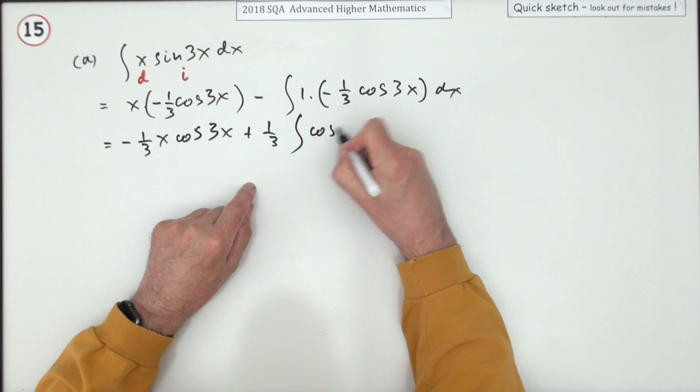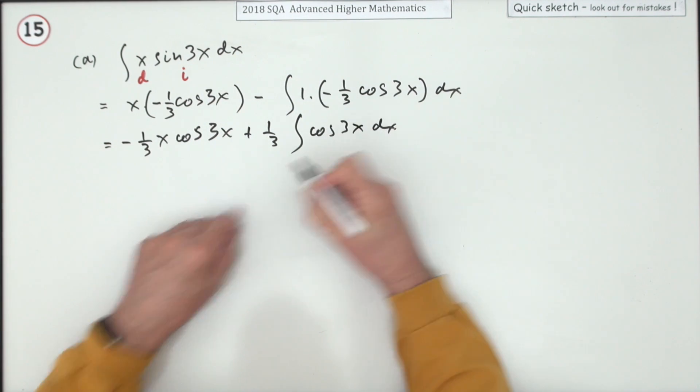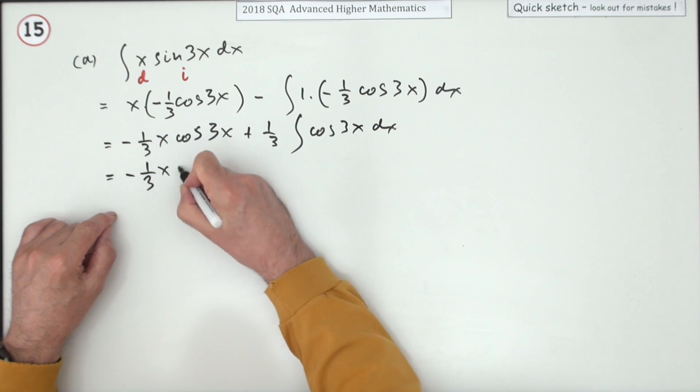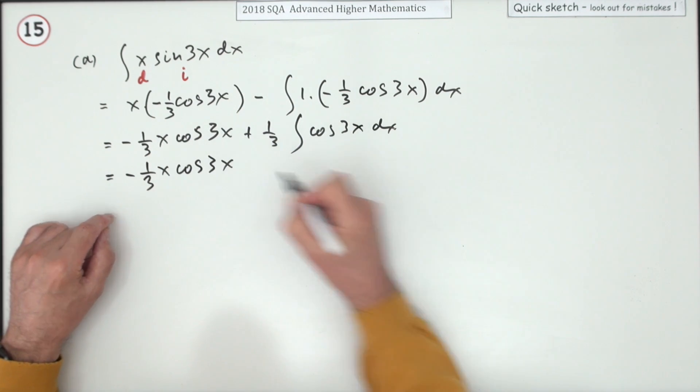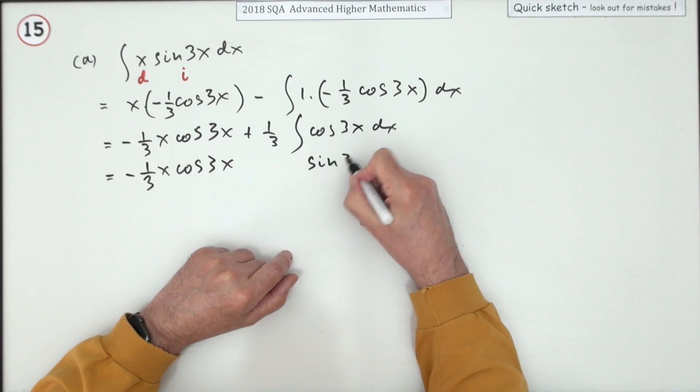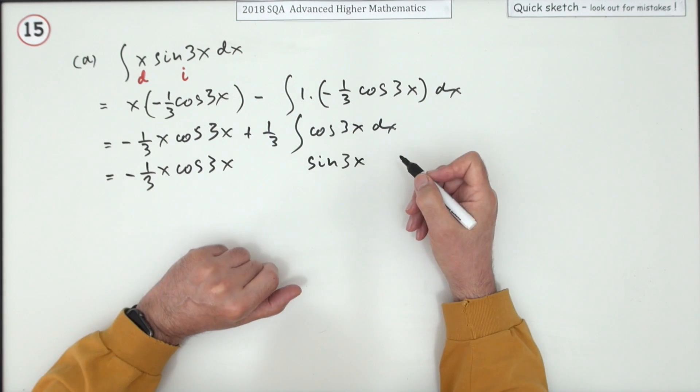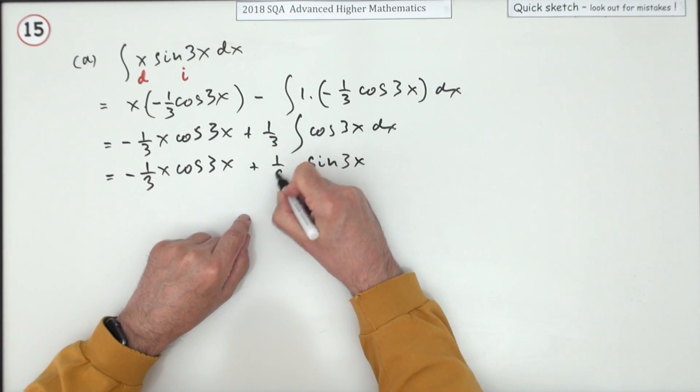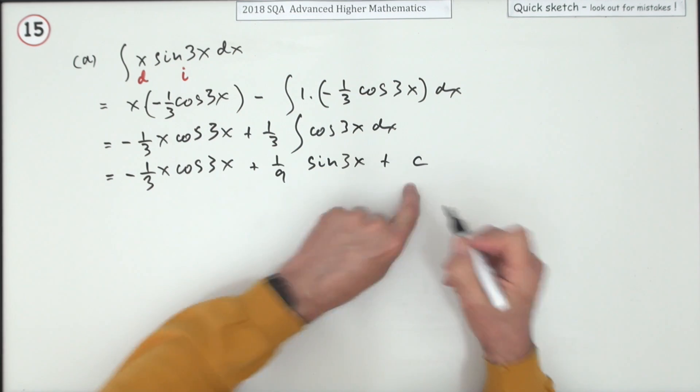Negative a third of x cos 3x, negative negative plus. Take the third out of that - a third of the integral of cos 3x. This always happens: you just have to keep copying that first part down. Cos goes back to sine and it's positive, but divide by the inner derivative of 3, which means you've now got a ninth of that. Don't forget plus c.